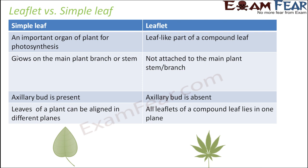Many people have a question: how does a leaflet differ from a simple leaf? When talking about a compound leaf it looks as if there are many leaves arranged together. This is very important and interesting. A simple leaf is an important organ of the plant for photosynthesis. A leaflet, however, is a leaf-like part of a compound leaf — it is not a leaf itself, just a part of a leaf.